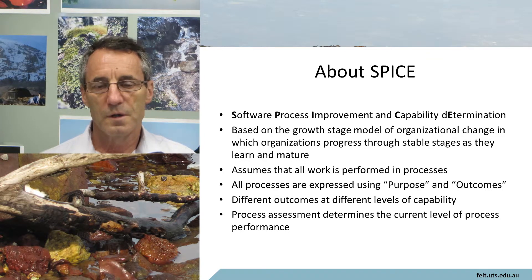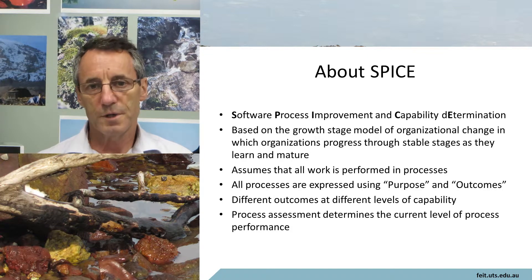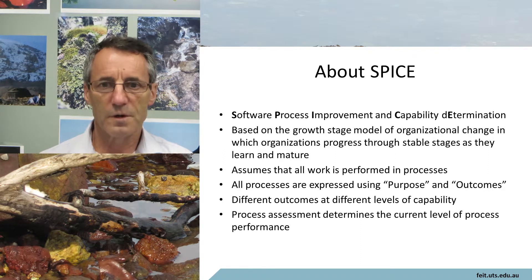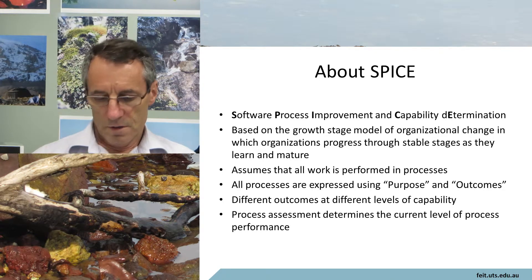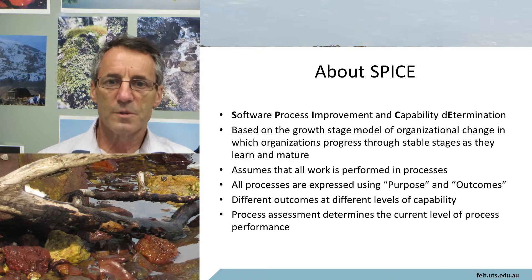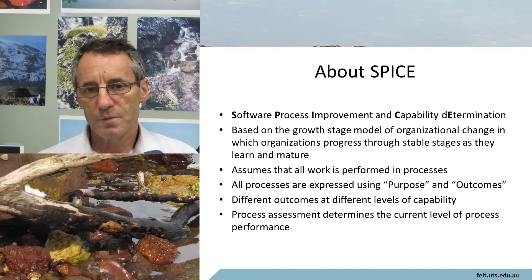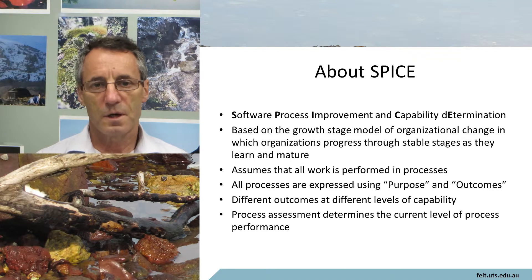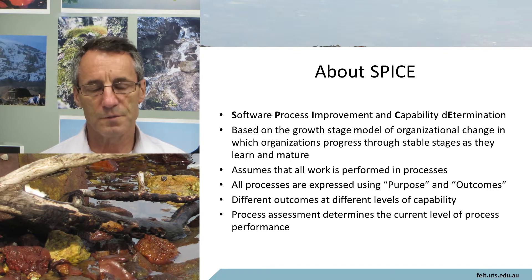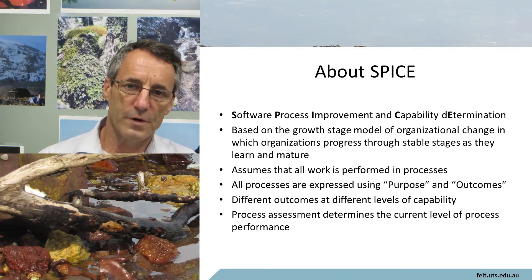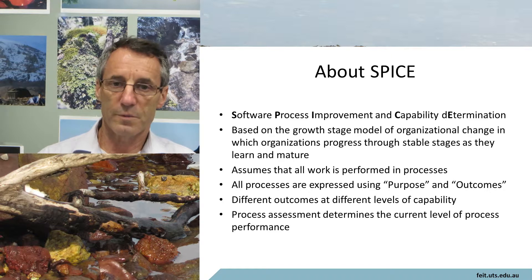There are different levels of capability and different outcomes for each level. For any one process, you get something like about 40 or 50 different outcomes that can be satisfied before you reach level 5. The whole point of the process assessment is to determine the current level of capability. Its primary purpose is not to identify faults and it's not to identify improvements — those can come out as observations. But the primary purpose of a SPICE assessment is to determine the capability level of each process.